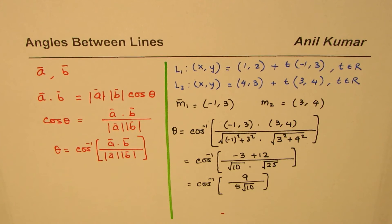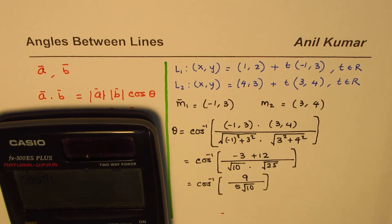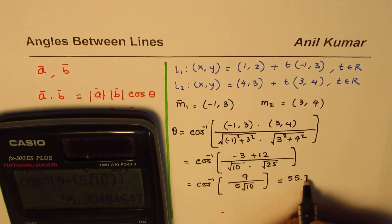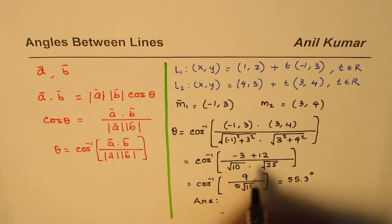At this stage you can use the calculator and write down your answer in degrees or radians. We have cos inverse of 9/(5√10), which gives us an angle of 55.3 degrees. So that is how you can find the angle between the lines.